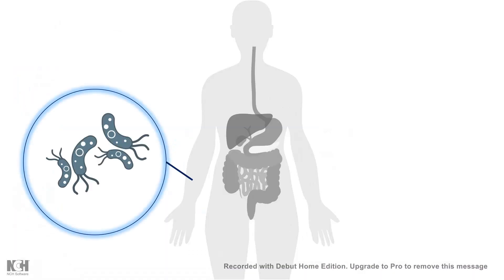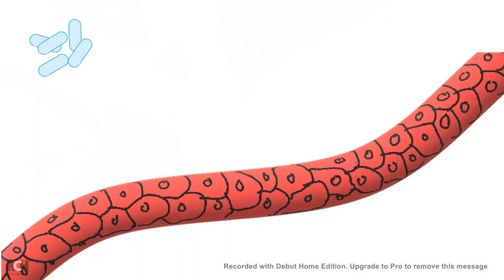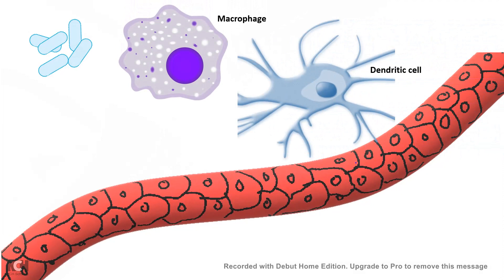Whenever our body is attacked by a pathogen such as a bacteria, the first line of defense is the innate immune system. Innate immune system components such as macrophages and dendritic cells attack these pathogens and try to neutralize them. Apart from macrophages and dendritic cells, one other component which is secreted in the bloodstream are the complement proteins.